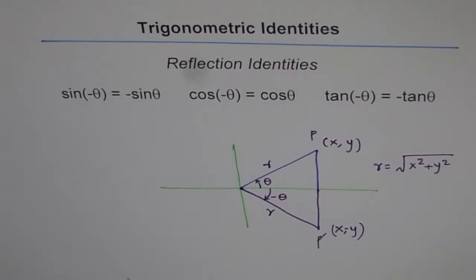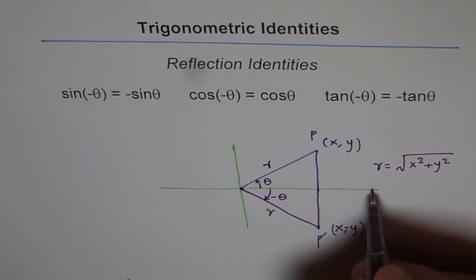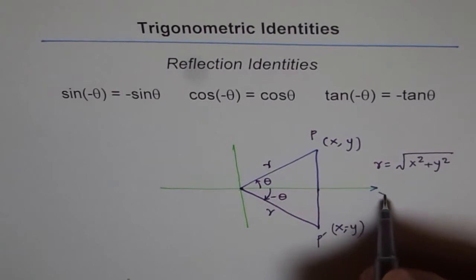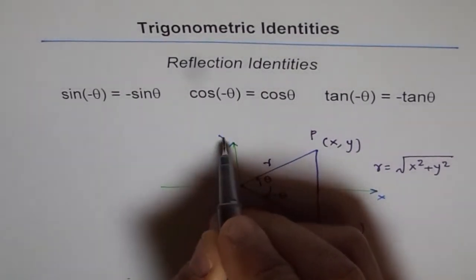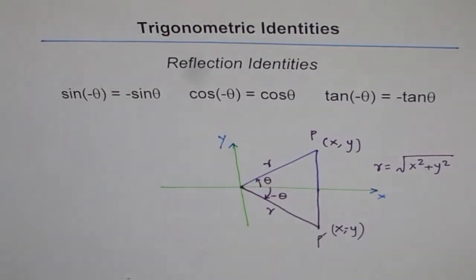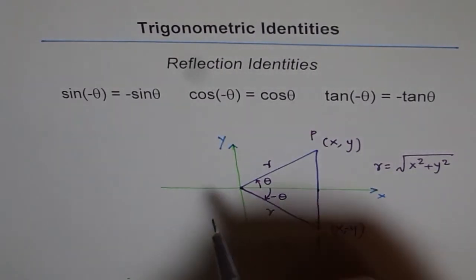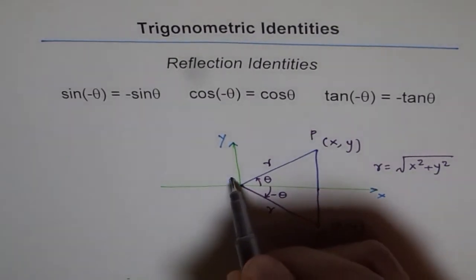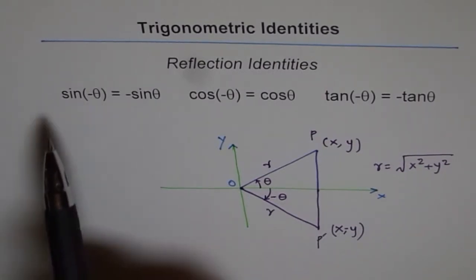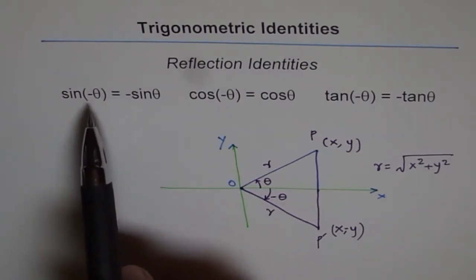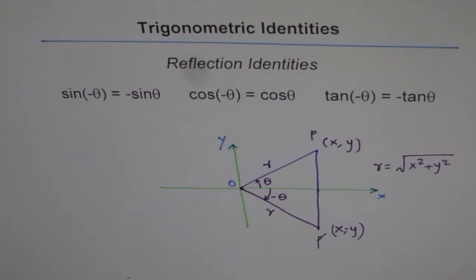In our coordinate system, we have the x-axis and the y-axis with the origin at center. From this setup we can prove that sin of minus theta is minus sin theta.